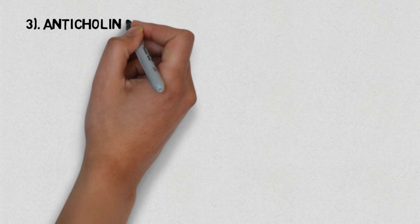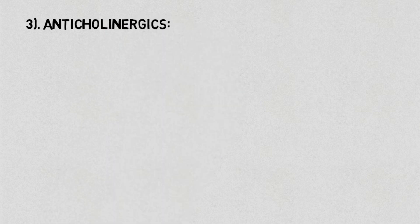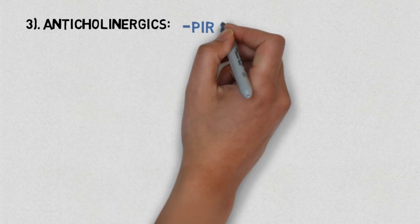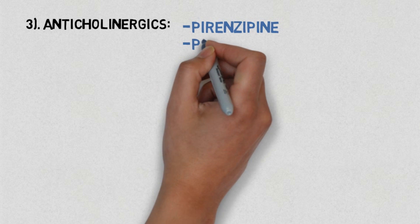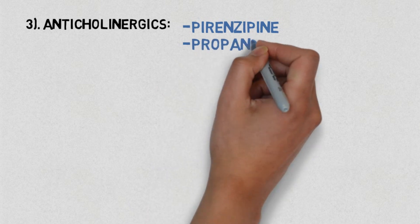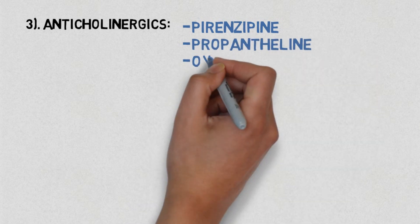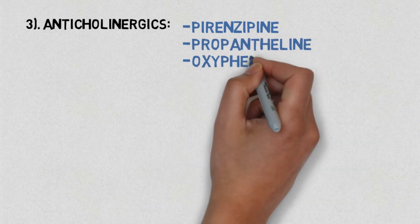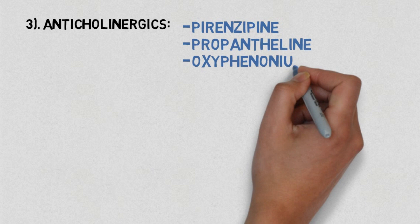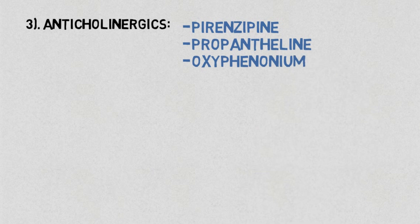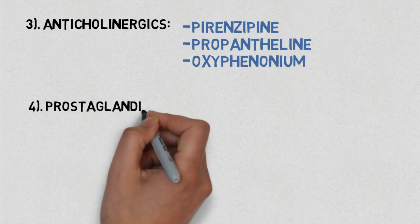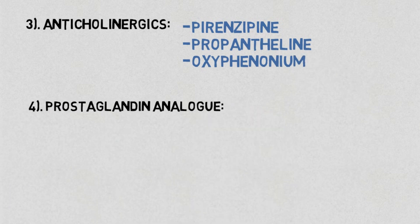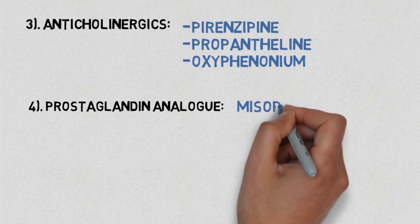Number three we have anticholinergics and number four we have prostaglandin analogs. In anticholinergics the drugs are pirenzepine, propantheline, and oxyphenonium. Whereas in prostaglandin analogs the drug is misoprostol.